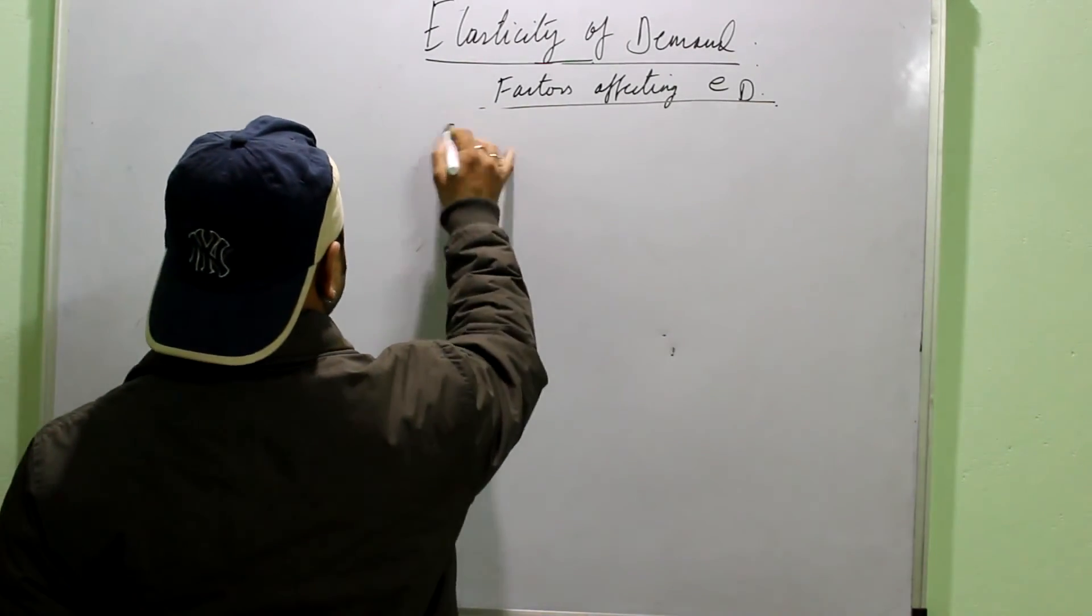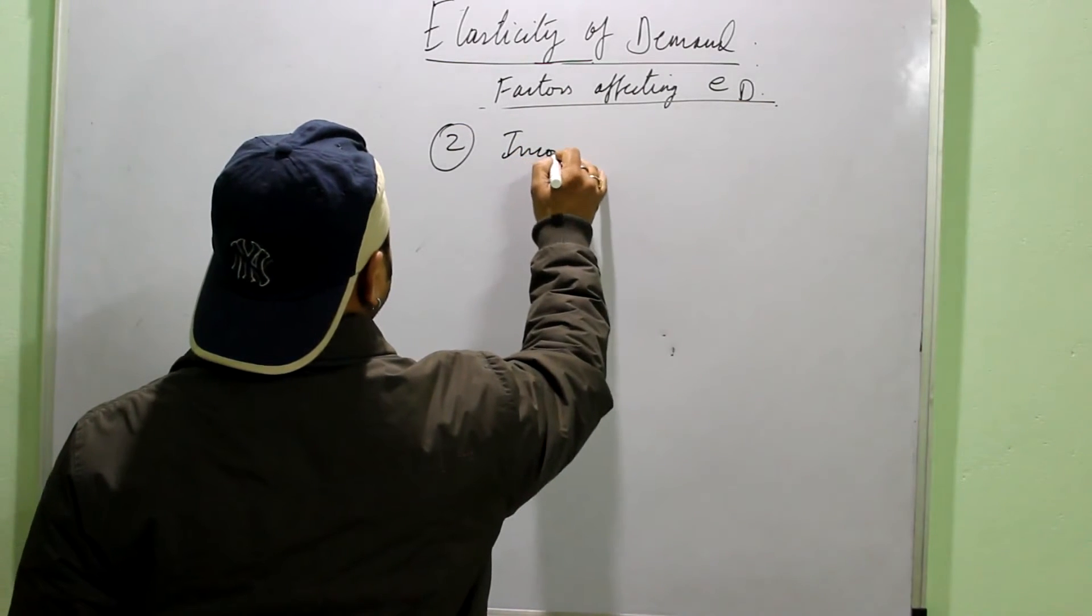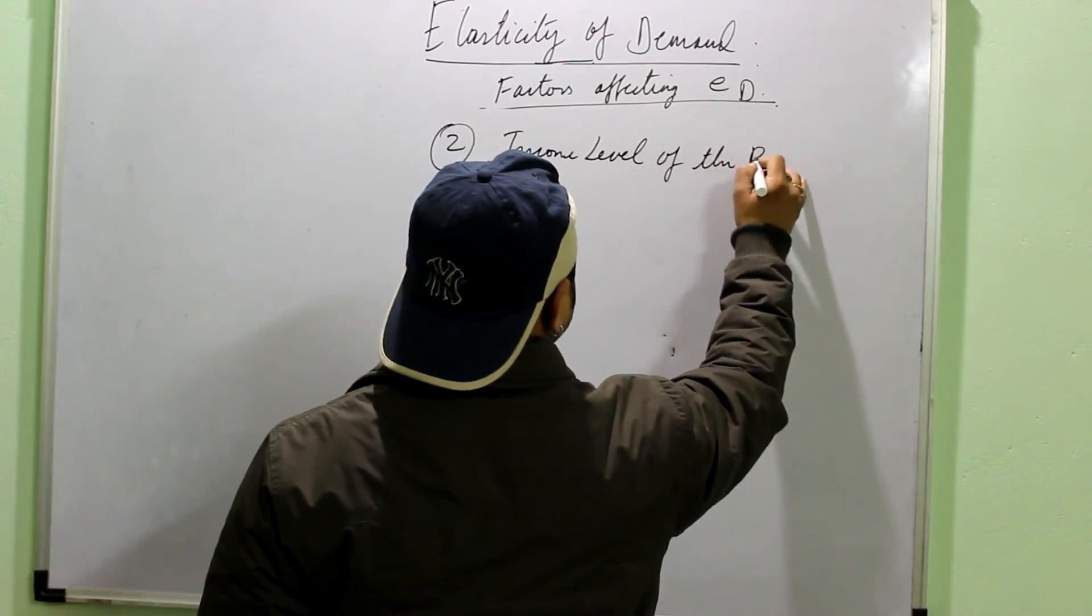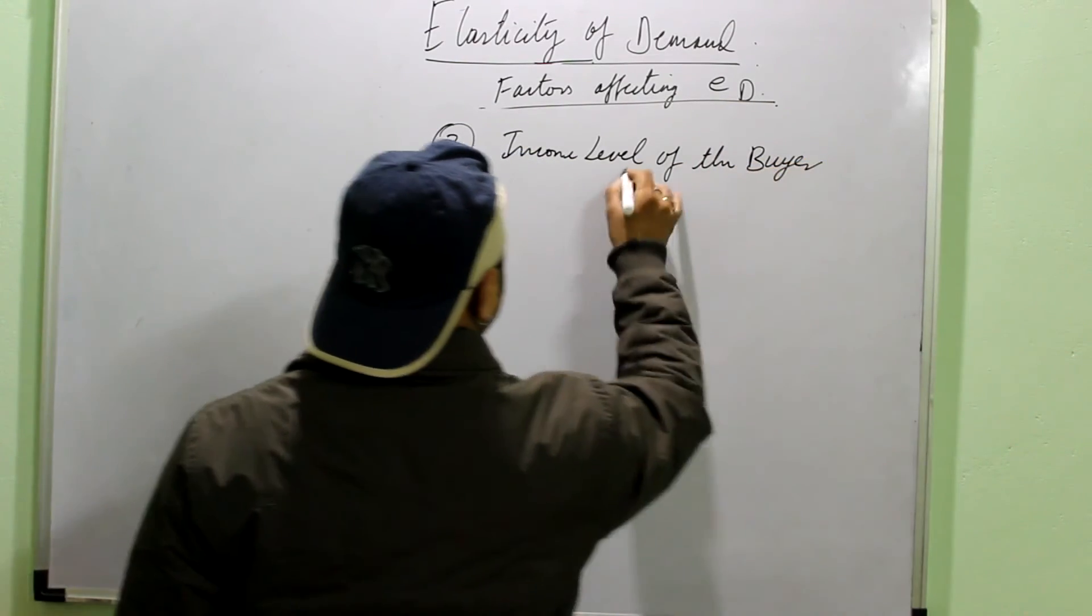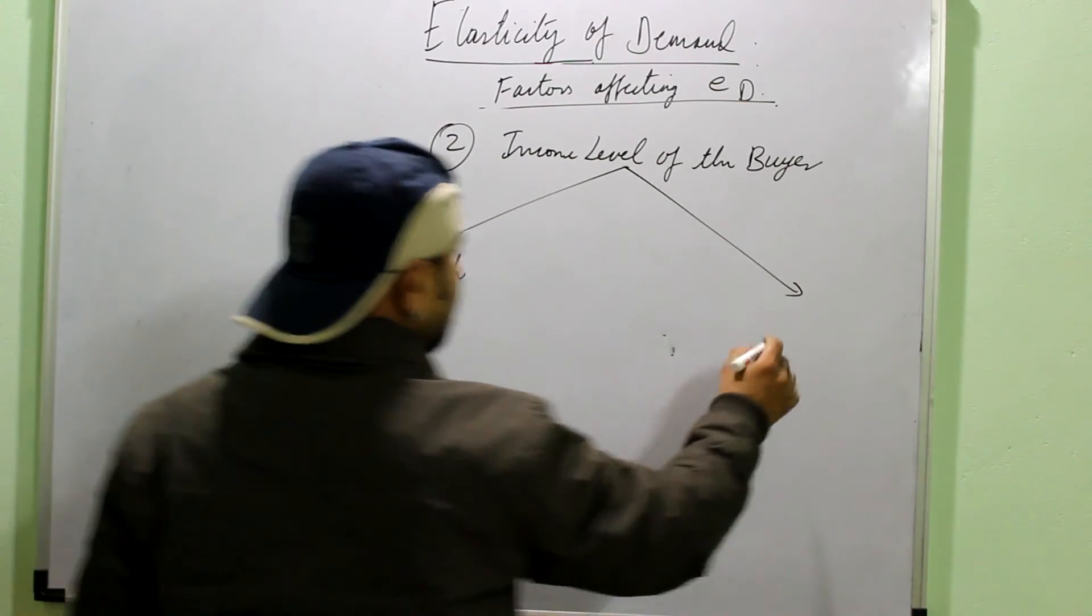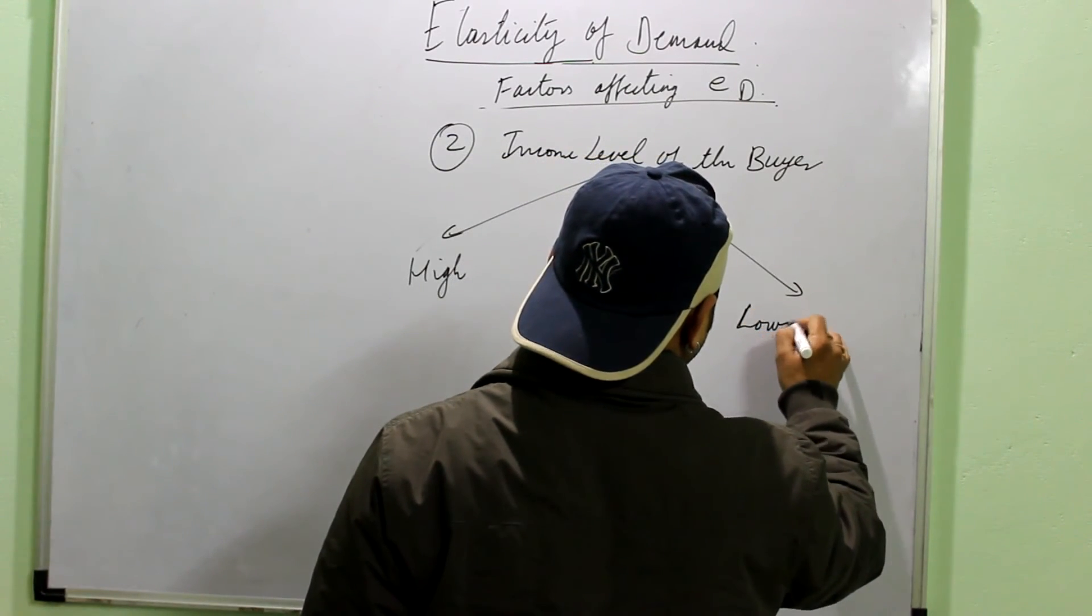Then, next is income level of the buyer. Again, you can divide the buyer into two groups. High level income group or high income group. Then, you have the low or the middle income group.